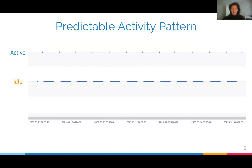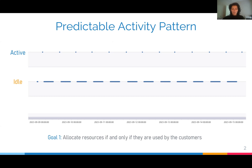We have analyzed hundreds of thousands of serverless databases worldwide and concluded that many of them have a predictable resource usage pattern. For example, this database is active during a very short period of time at the same time during the day, and it's idle otherwise. We want to leverage such predictable patterns to allocate resources if and only if they are used by the customers. In this way, we make sure that we guarantee high quality of service and avoid wasting resources.